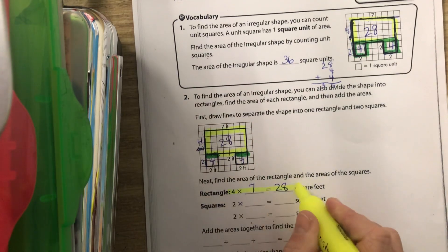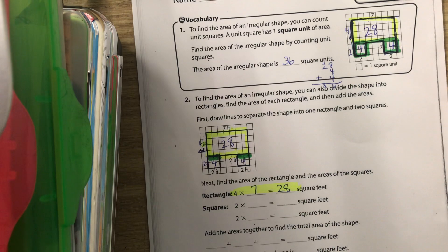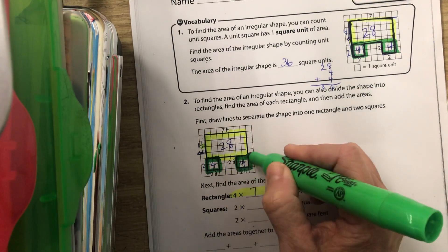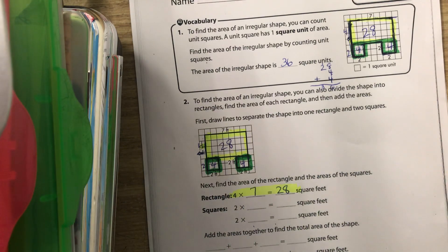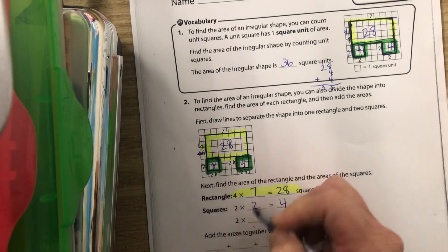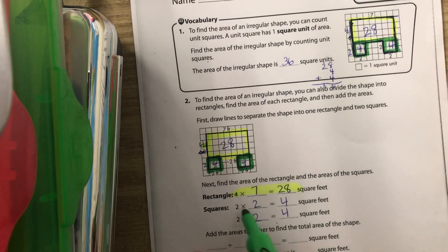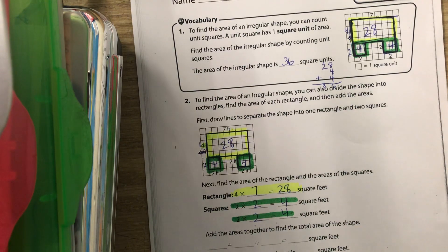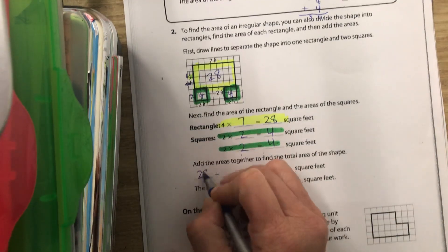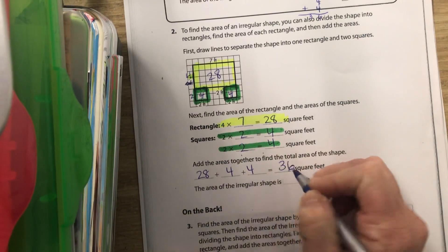Then we have two squares right down here: two times two, which equals four, and two times two, which equals four. Those are our two squares at the bottom. Then we add them all up: 28 plus four plus four equals 36. So the area of the irregular shape is 36 square feet.